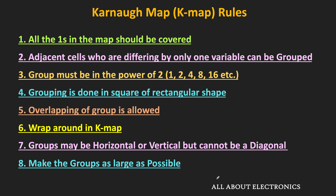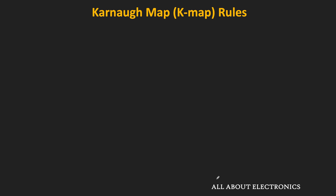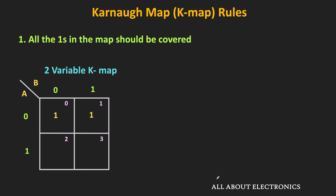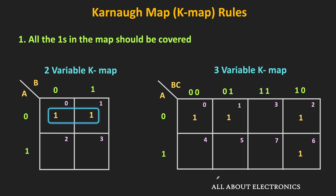The first rule is: while minimizing any Boolean expression, all the ones in the K map should be covered. For example, in this two-variable K map, if we have two ones, then during the minimization using grouping, all the ones should get covered. Similarly, in the three-variable K map, if we have four ones, then during the minimization by making groups, all the ones should get covered.